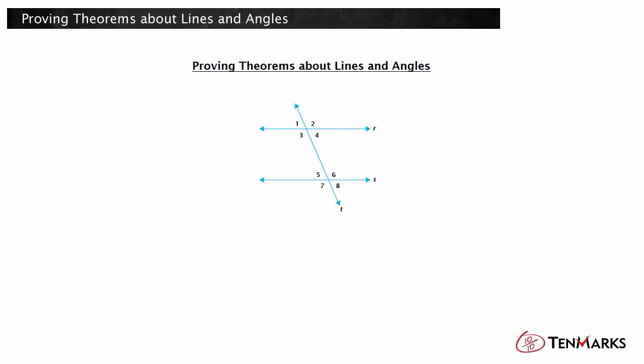Same side interior angles, such as angles 4 and 6, and same side exterior angles, such as angles 2 and 8, are supplementary. When two angles are supplementary, their measures add to 180 degrees.